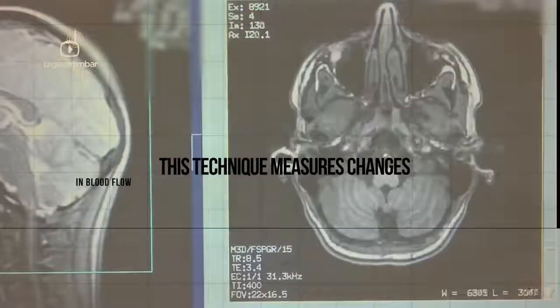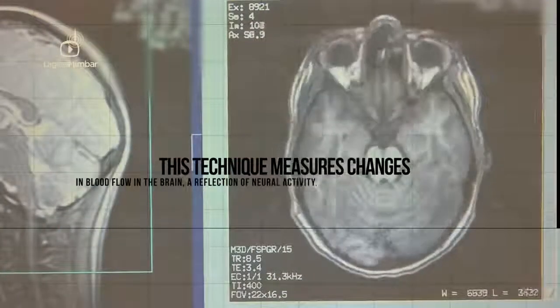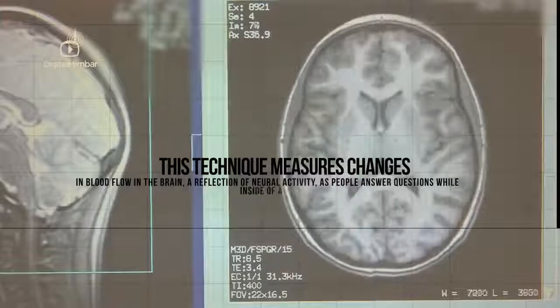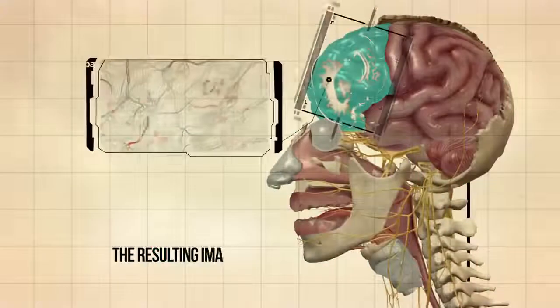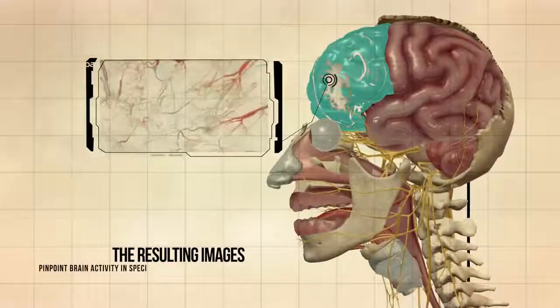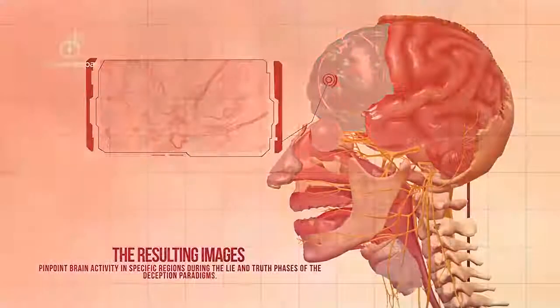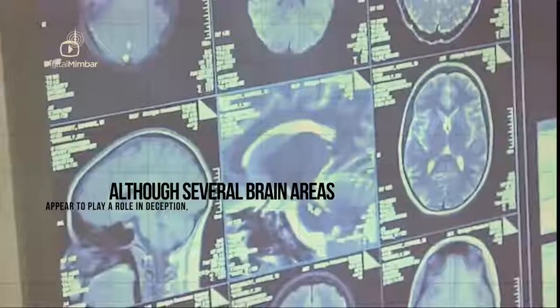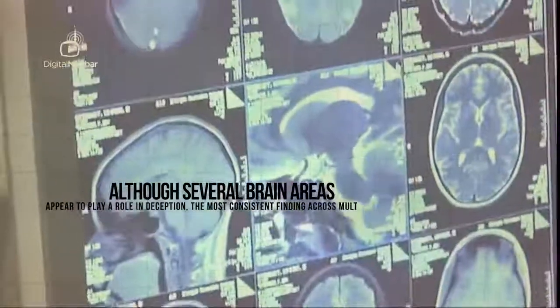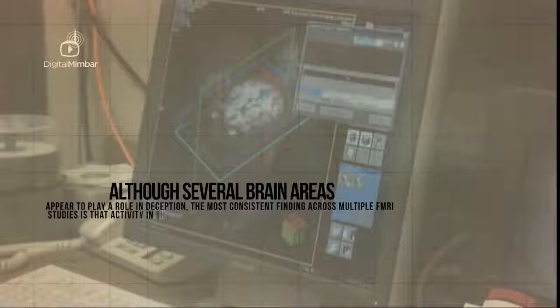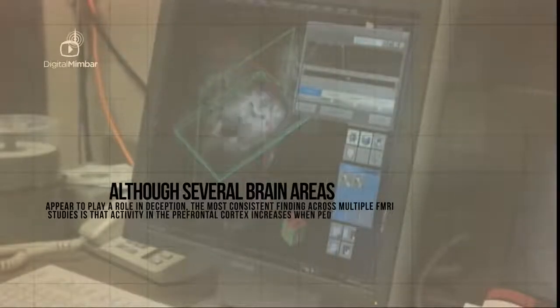This technique measures changes in blood flow in the brain, a reflection of neural activity, while people answer questions inside a scanner. The resulting images pinpoint brain activity in a specific region during the lie and truth phases of the deception paradigms. Although several brain areas appear to play a role in deception, the most consistent finding across multiple fMRI studies is that activity in the prefrontal cortex increases when people lie.